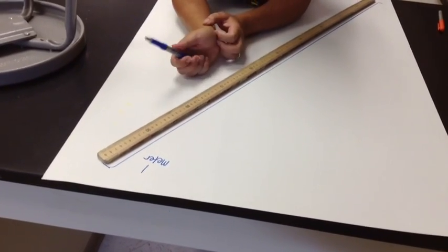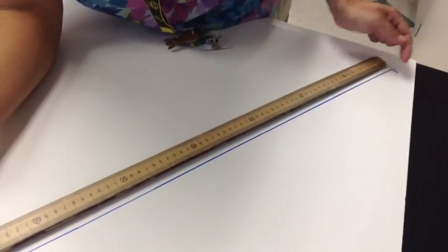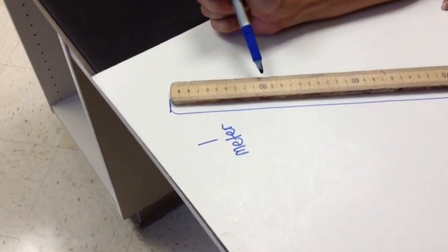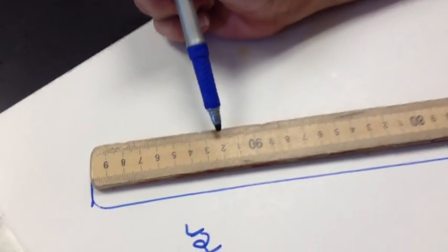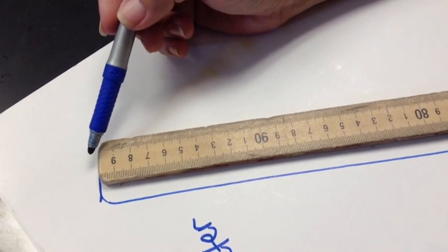We've got a meter stick here and the distance or the length from one end all the way to the other end is a meter. Look at the numbers there - you see it's 90, 91, 92, 93, goes all the way up to the end which would be 100, but they don't have room to put 100 over there.